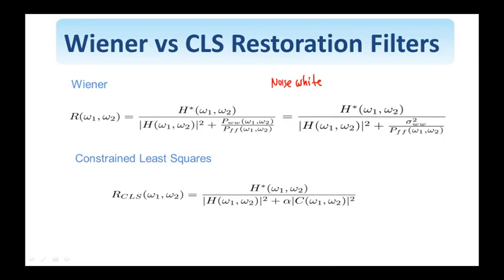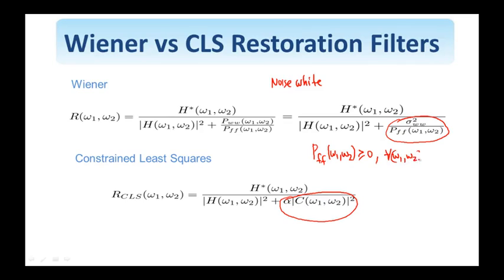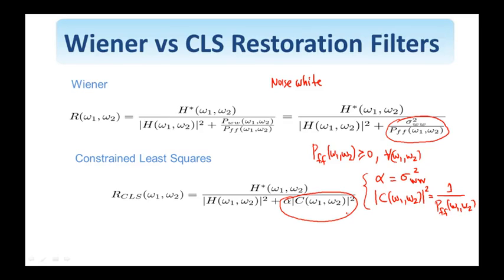By comparing the two, it's crystal clear that they're very similar. The difference lies between this term and this term. It can be shown that the power spectrum is real and more specifically non-negative — P(ω₁, ω₂) is greater or equal to 0 for all ω₁, ω₂. Therefore, if alpha is equal to the variance of the white noise, and the magnitude of the smoothness filter is 1 over the spectral density of the image, then the two filters become identical. Clearly, when alpha is 0 and the noise variance is 0, both filters reduce to the least squares filter or generalized inverse filter.